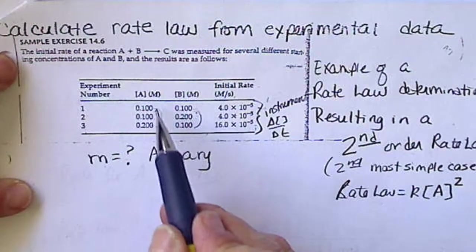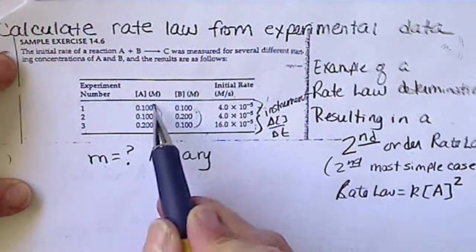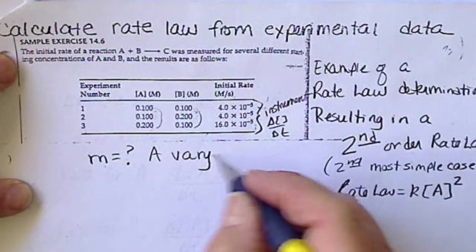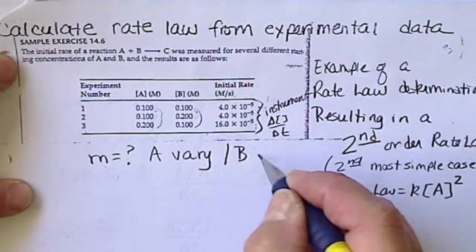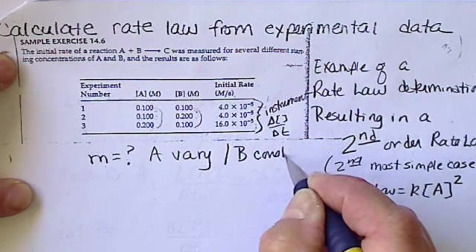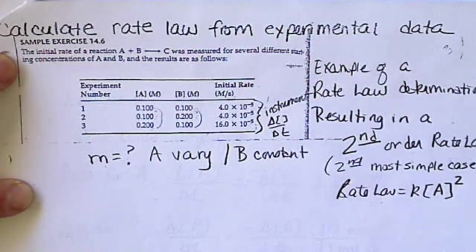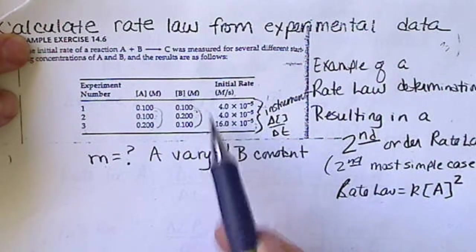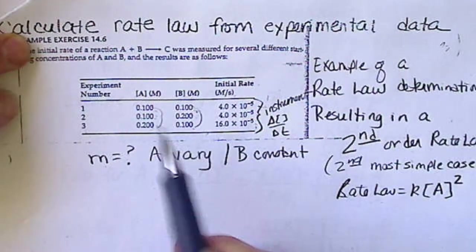So, if I look at this, A varies from experiment 1 and 3 and experiment 2 and 3. But we have to see when A varies and B is constant. So, we have to be careful when we're comparing experiments. B stays constant in experiment 1 and 3 and A doubles.